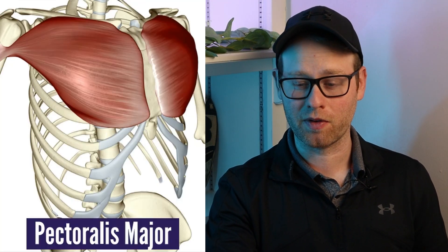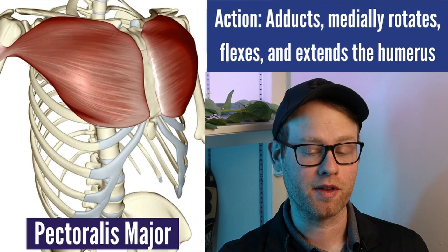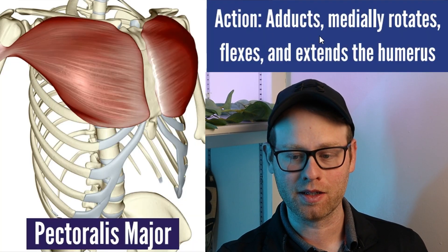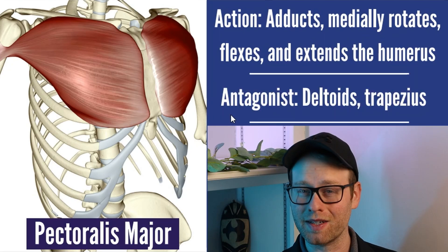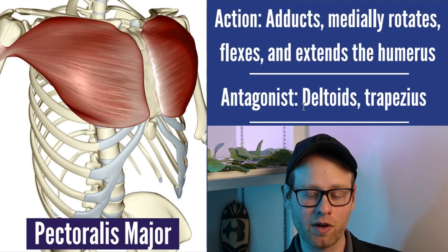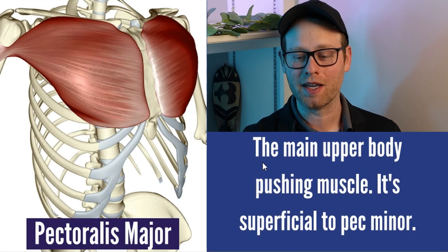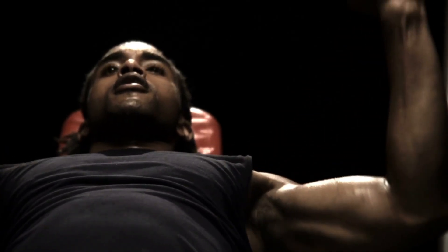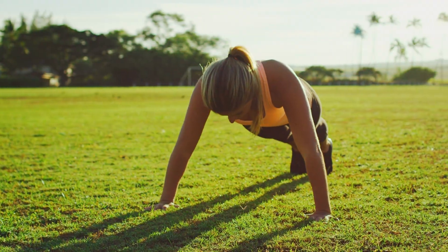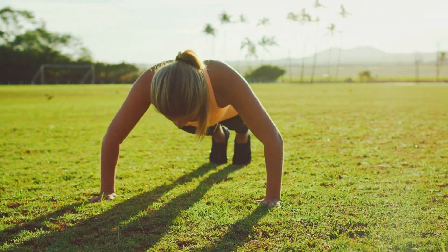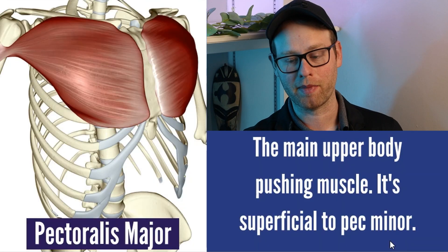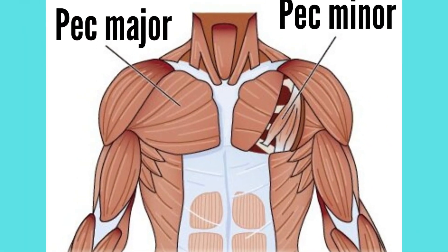Next up, we have pectoralis or pec major. Pec major does a bunch of different things acting on the humerus and shoulder joint — adduction, some medial rotation, and some flexion. Its main antagonists would be the deltoids and the trapezius. Pec major is the main upper body pushing muscle, so if you're doing bench press or push-ups, pec major should be doing most of the work. It is also superficial to pec minor, meaning pec minor is deeper — pec major sits on top of pec minor.